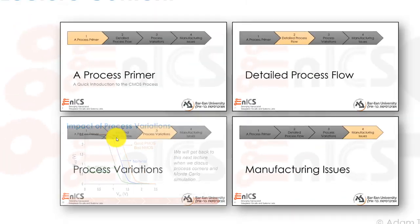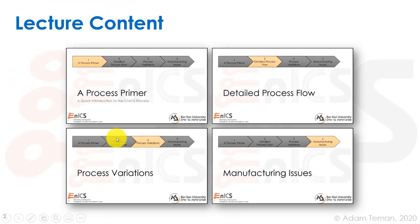That's it for this section. In the next section, we're going to discuss a number of manufacturing issues that occur due to process variation and due to the improvements in the process that we've discussed throughout this lecture.